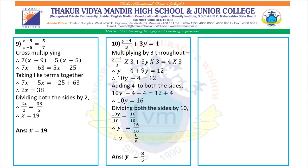Tenth: (y minus 4) upon 3 plus 3y equals 4. Multiplying by 3 throughout: (y minus 4) upon 3 into 3 plus 3y into 3 equals 4 into 3. Therefore y minus 4 plus 9y equals 12, so 10y minus 4 equals 12. Adding 4 to both sides: 10y equals 16. Dividing both sides by 10: y equals 16 upon 10, which simplifies to y equals 8 upon 5. The answer is y equals 8 upon 5.